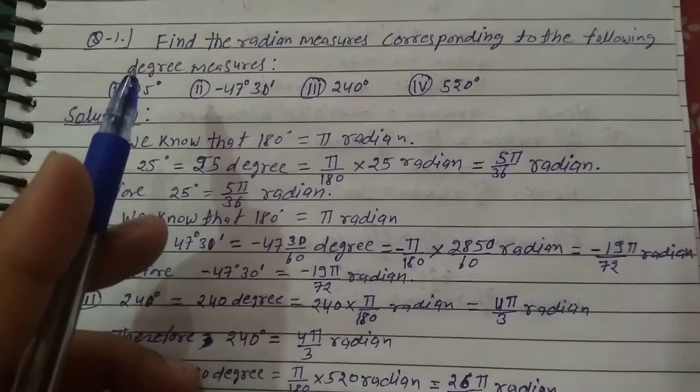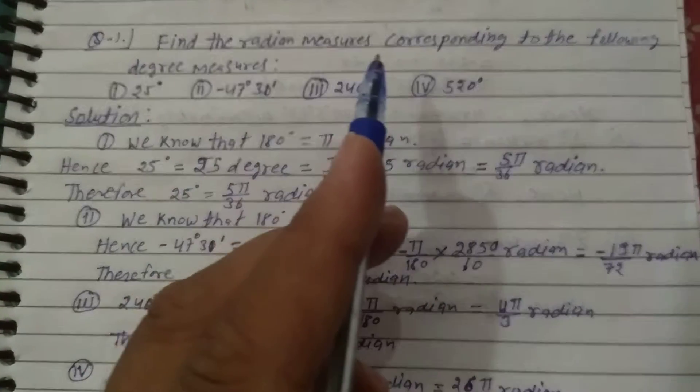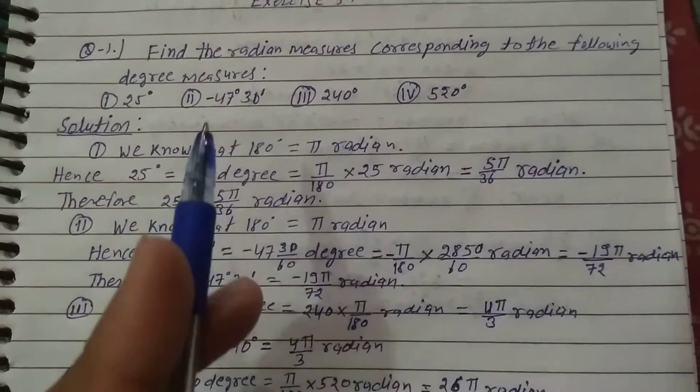I'll explain question number 1 from Exercise 3.1, Class 11th: Find the radian measure corresponding to the following degree measures.